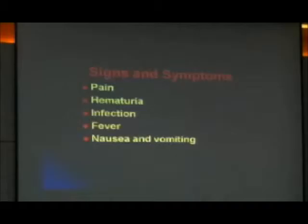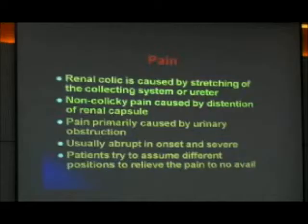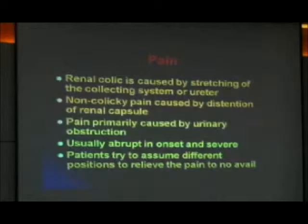Now that we know what produces and prevents stones, how do we diagnose it? As clinicians, we need a basic tool to identify which patients have a possible stone. The key symptoms are pain, bleeding, infection, fever, and nausea. Pain in renal colic is caused by stretching of the collecting system or ureter. A constant, non-colicky pain is caused by distension of the renal capsule. Pain in stones is primarily caused by urinary obstruction — that means if there's no obstruction, there's no pain. Patients may have stones for years and not feel anything.